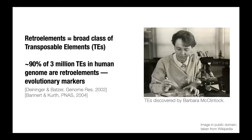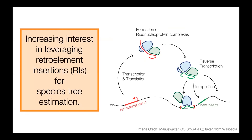Barbara McClintock discovered transposable elements in the 1940s, and with the advent of genome sequencing there is all of this research to annotate TEs in the genomes of different species. As an example, there are 3 million TEs in the human genome and about 90 percent of them are retro elements, which are a copy-paste type of transposable element found in mammals, birds, and plants — and there's increasing interest in leveraging them for species tree estimation.